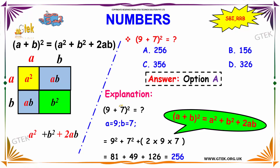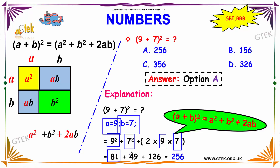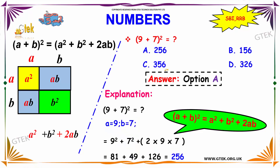So, 9 plus 7 whole square: a is equal to 9, b is equal to 7. So a square plus b square plus 2 into a into b gives us 81 plus 49 plus 126. The answer is 256. So it's option A.